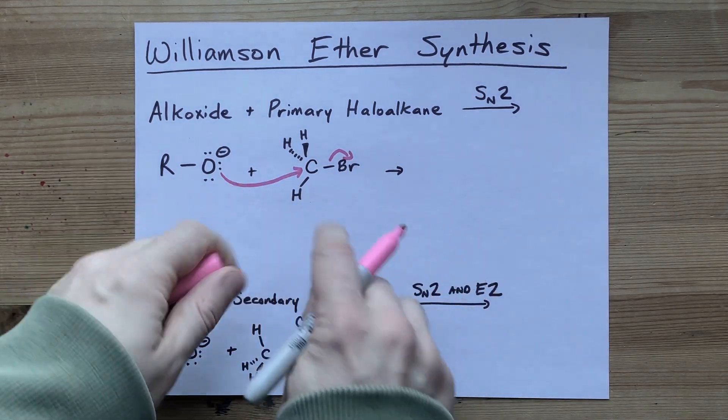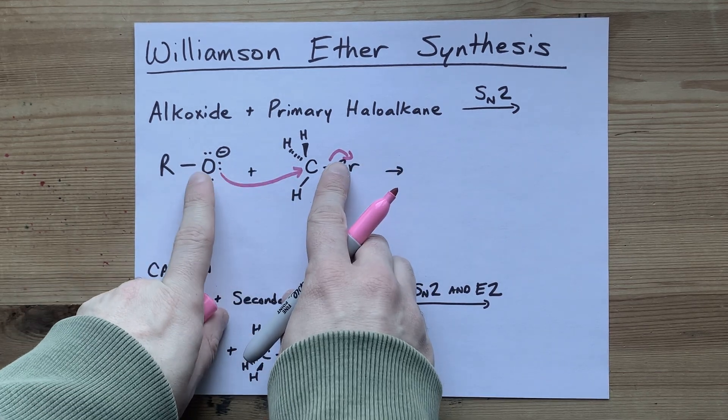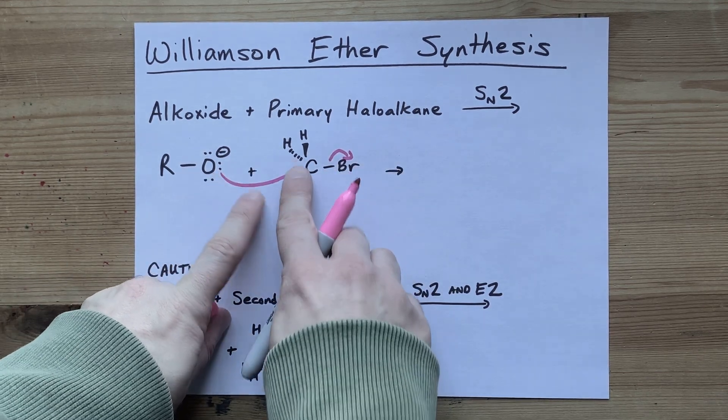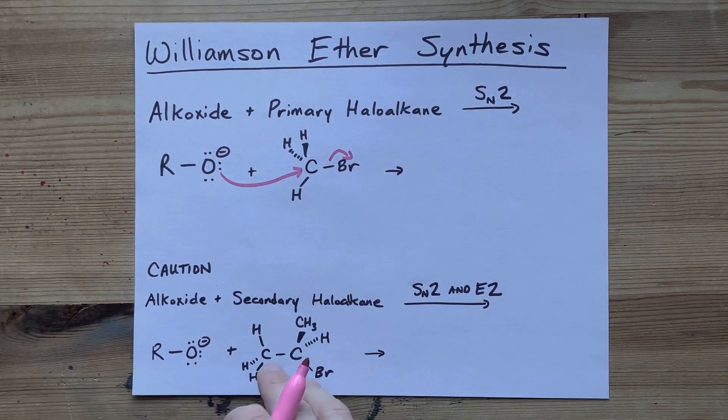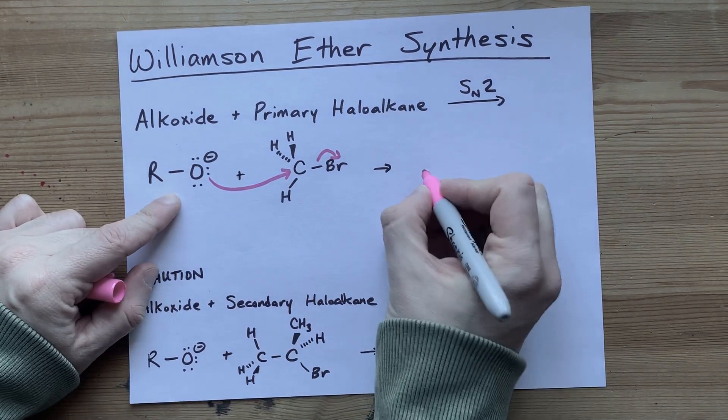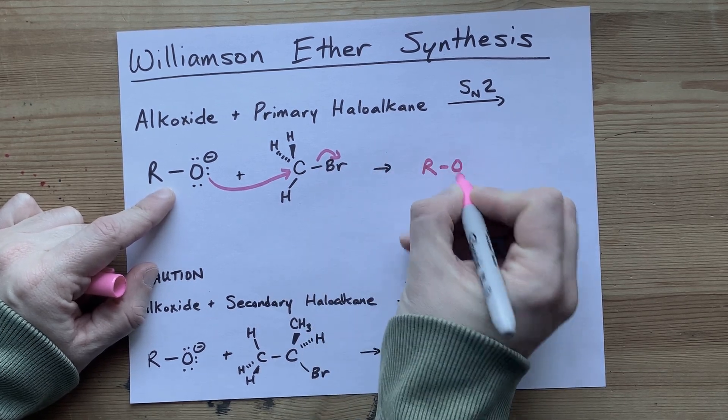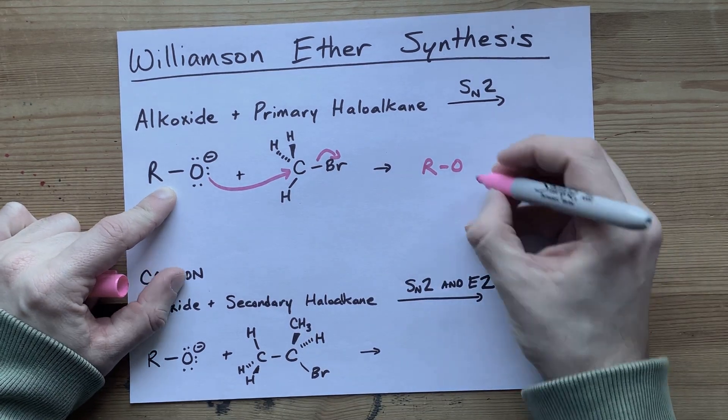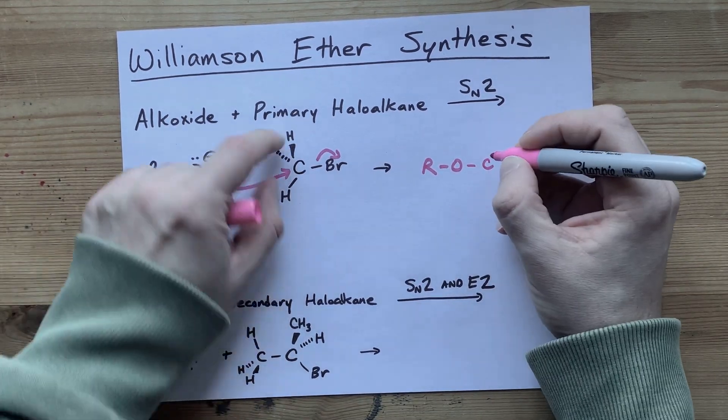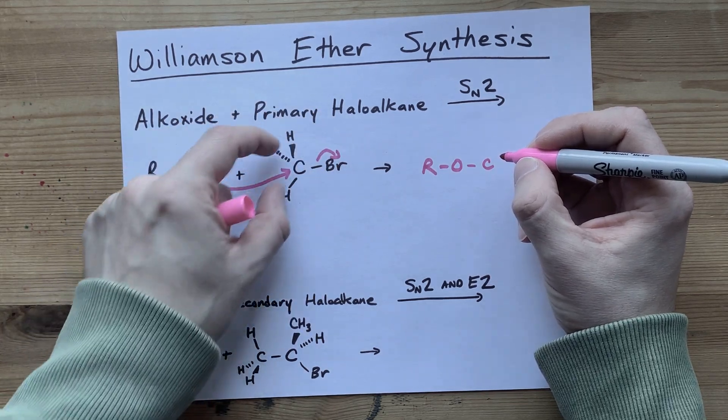There's an intermediate where both of these are half connected, or I guess it's a transition state, where both of these are half connected and these hydrogens are all in the same plane as each other. What ends up happening is that bromine is gone. You have your R and O attached to the other side of the carbon compared to where the bromine was.